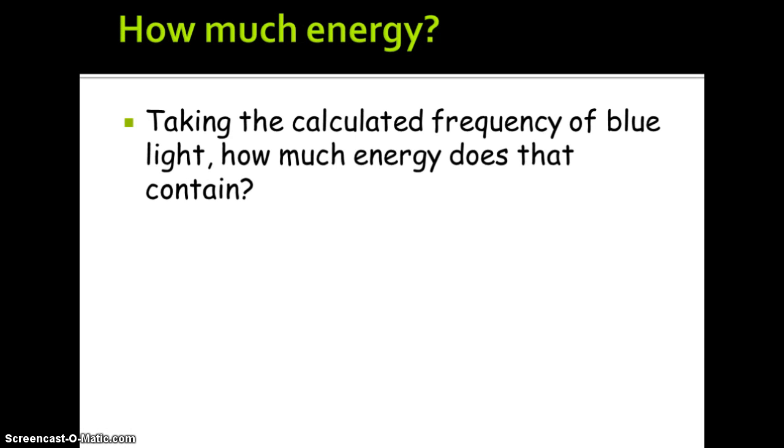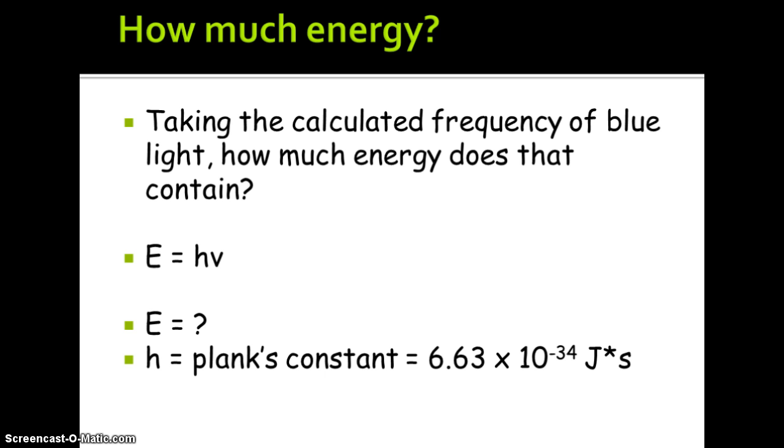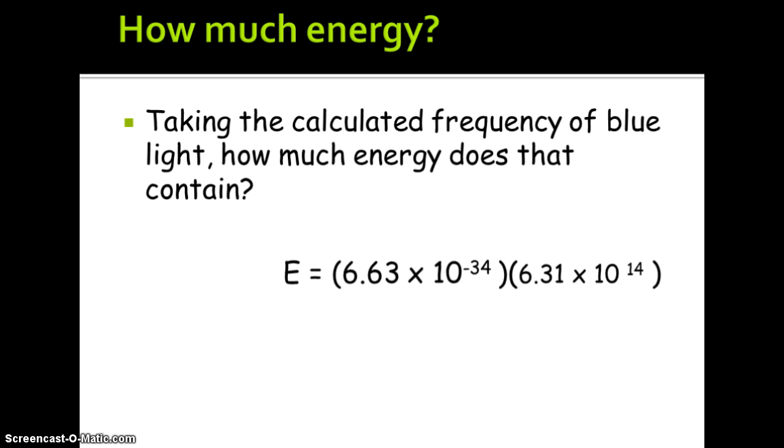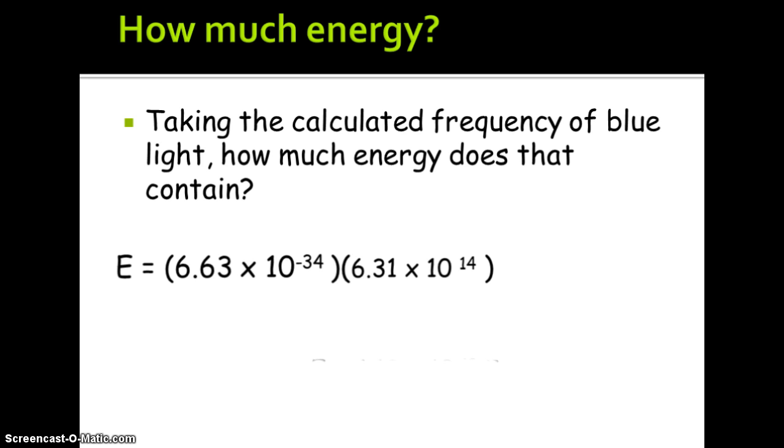Now, taking the calculated frequency of blue light, how much energy does that contain? We use energy equals H, or Planck's constant, times nu, the frequency. We know H is 6.63 times 10 to the minus 34 joule seconds, and the frequency we just calculated is 6.31 times 10 to the 14th hertz. We just multiply, and our energy equals 4.18 times 10 to the minus 19th joules.